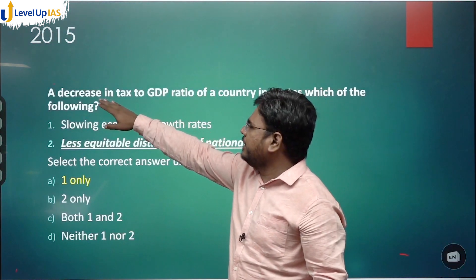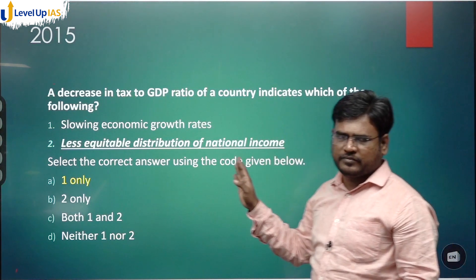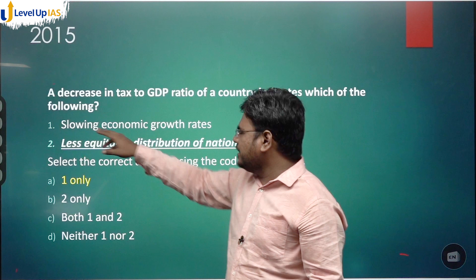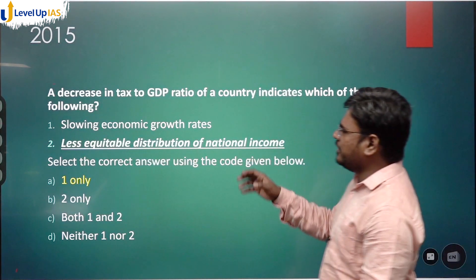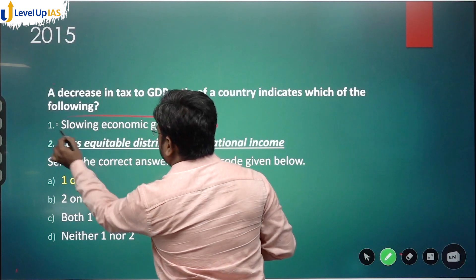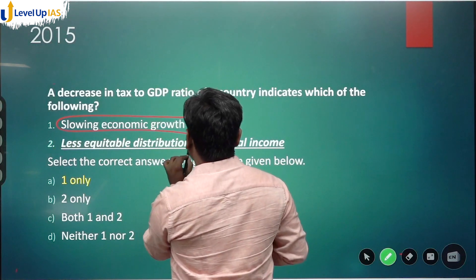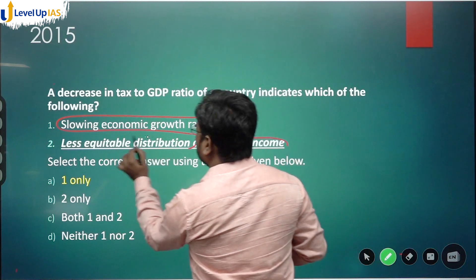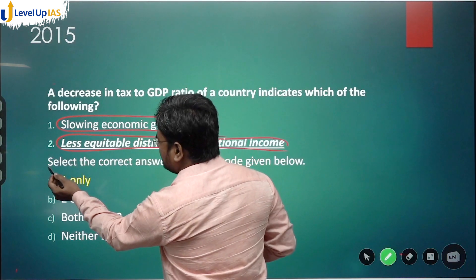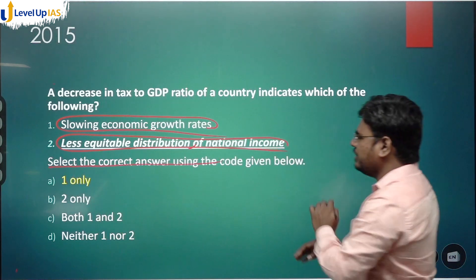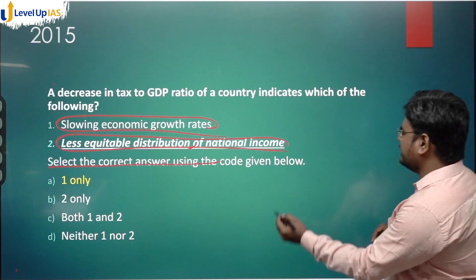Now, the question: a decrease in tax-to-GDP ratio of a country indicates which of the following? Statement one is slowing economic growth rate, statement two is less equitable distribution of national income. Select the correct answer using the code given below.